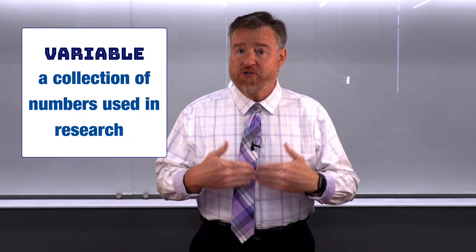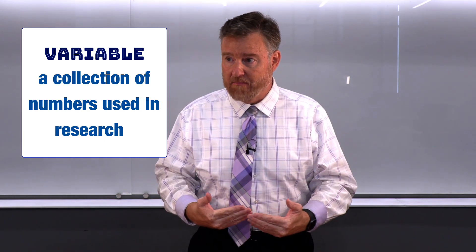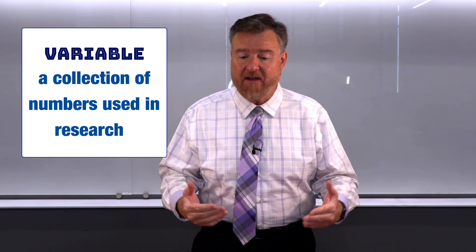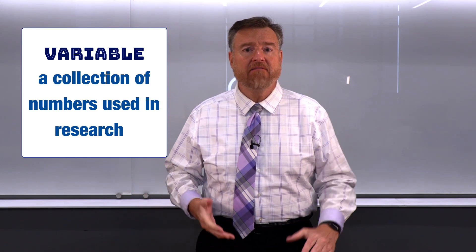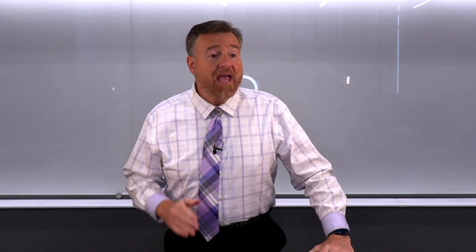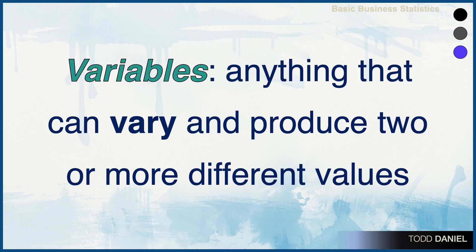A collection of numbers is called a variable. What makes something a variable? A variable is anything that can vary — it can take on more than one value. A variable can take on two or more values. That is variability.